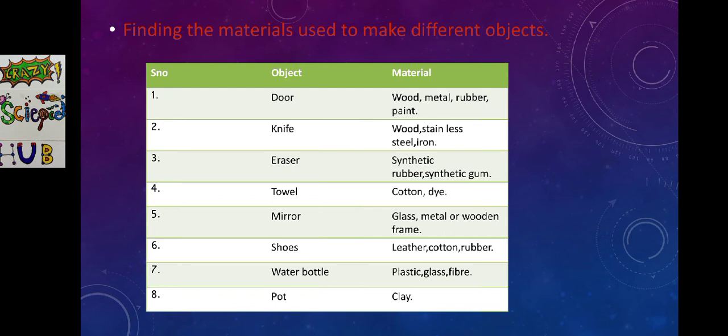Now we are going to do an activity to find the materials used to make different objects. Let us have a look at this table. First object is door. What is door made up of children? Wood, metal, rubber, paint. Second object, knife: wood, stainless steel, iron. Similarly, remaining objects also. You just note all the materials which are used to make different objects in your notebook.